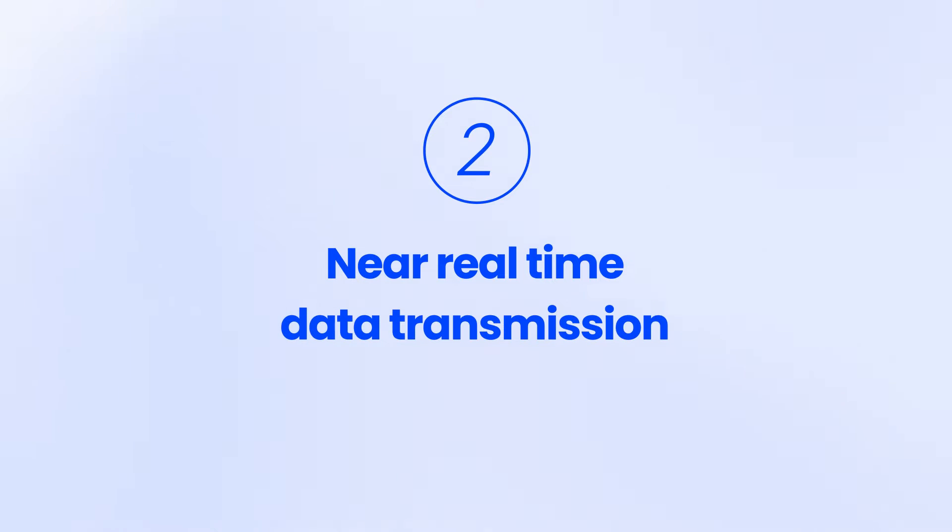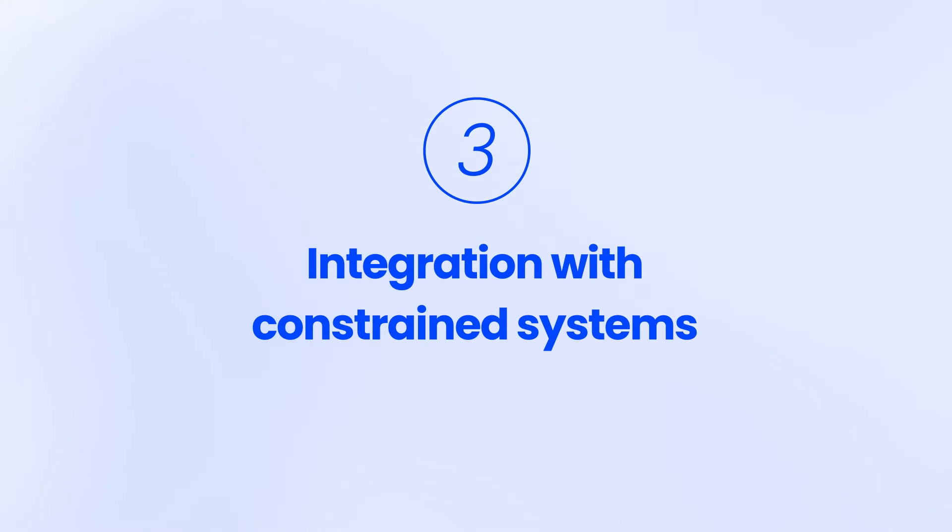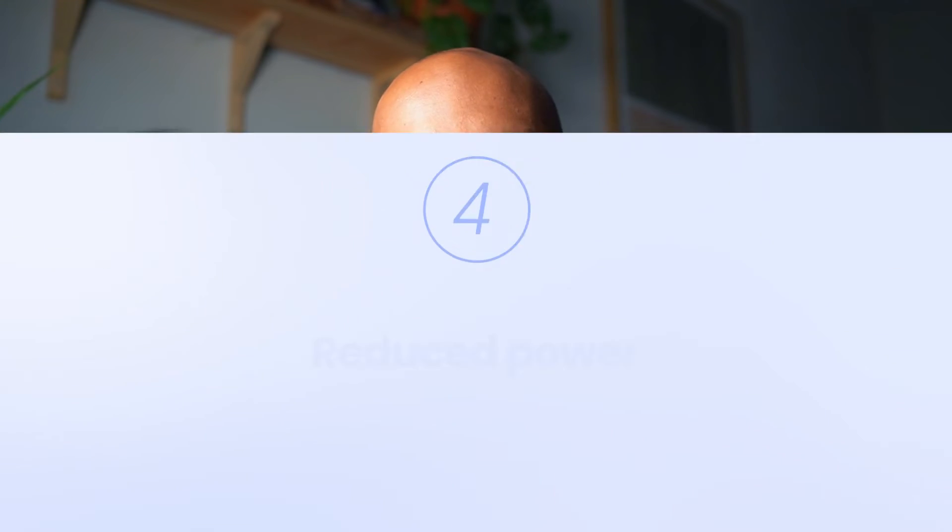Two: real-time data. MQTT is designed for real-time data transmission, making it good for applications like asset tracking, smart cities, and environmental monitoring. Three: integration with other systems. MQTT is a widely supported protocol with a big ecosystem of libraries, making it easy to use with embedded hardware, cloud platforms, and more.